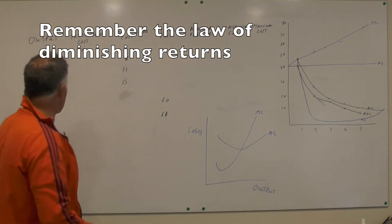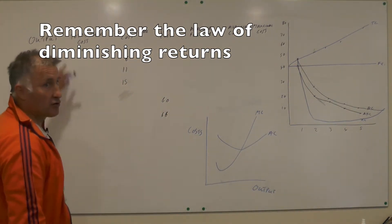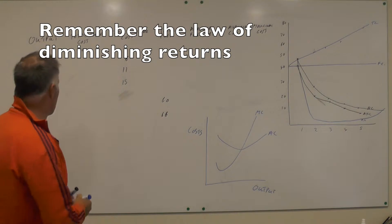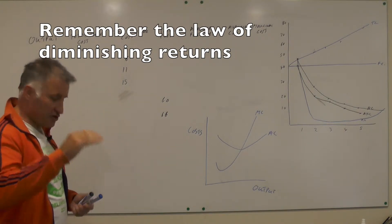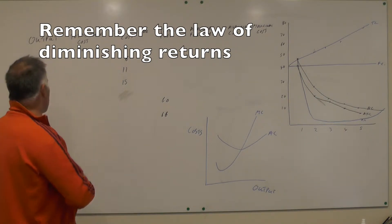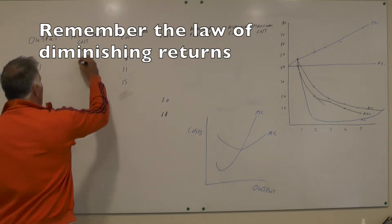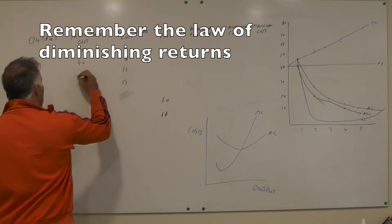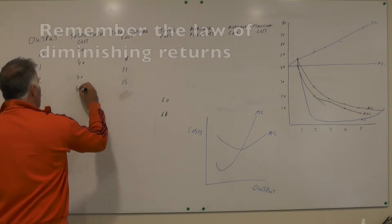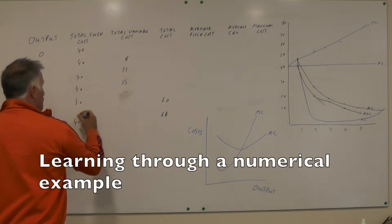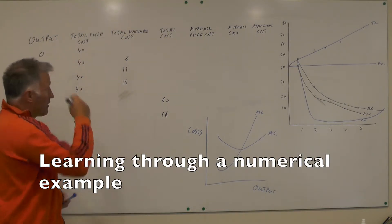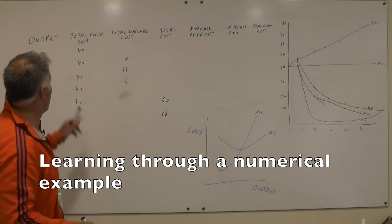So we've got output: 0, 1, 2, 3, 4, 5, and we've got total fixed cost along here. If it's a fixed cost, it does not change with output. So that's going to be 40, 40, 40, 40, 40 all the way down.